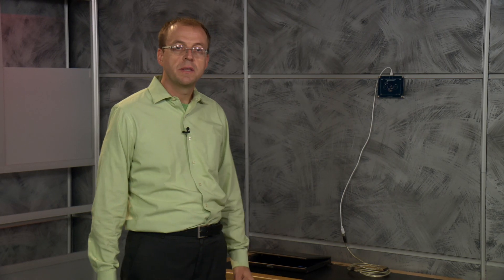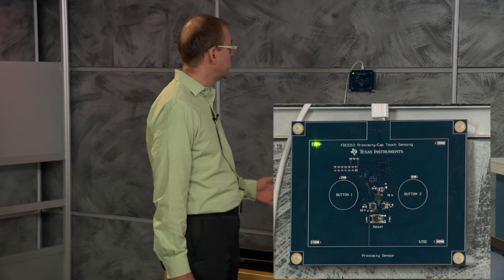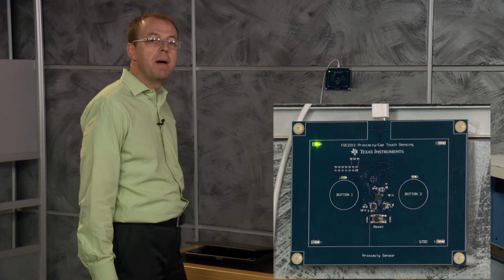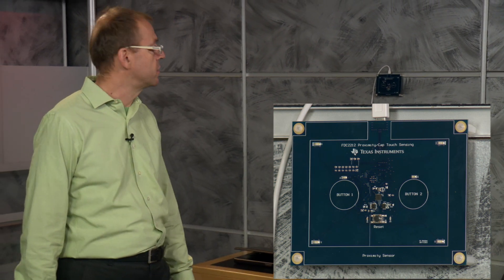Now take a look at this enhanced version of the EVM that looks like a capacitive sensing board that may be used in a refrigerator display. When I stand in front of it, it recognizes my presence and turns the LED on. When I back away, the LED turns off.